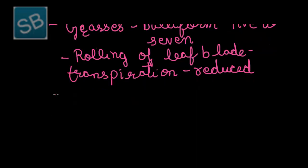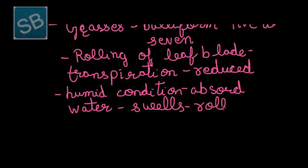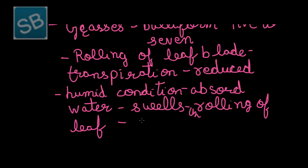However, in humid conditions, these grasses absorb water and the bulliform cells swell, resulting in the unrolling of the leaf, as a result of which movement occurs. Thus, this type of movement caused by these cells means they are known as motor cells.